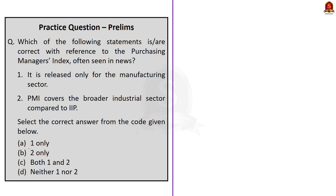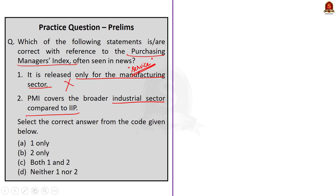For the second question on the Purchasing Managers Index: Statement 1 says it is released only for the manufacturing sector — this is incorrect because PMI is released both for the manufacturing sector and for the service sector. Statement 2 says PMI covers a broader industrial sector compared to the Index of Industrial Production (IIP) — this is also incorrect. IIP covers the broader industrial sector compared to PMI. PMI is more dynamic compared to a standard industrial production index. Therefore, the correct answer is option D: neither one nor two.